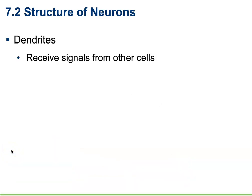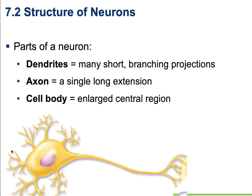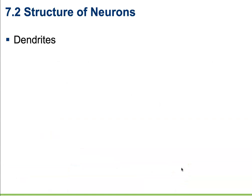The dendrites are going to be responsible for receiving signals from other cells. They're going to be our receivers, our antennas. They're going to pick up information and pass it along the cell body to the axon, where it will then be sent on to the next cell.